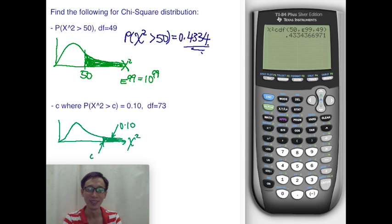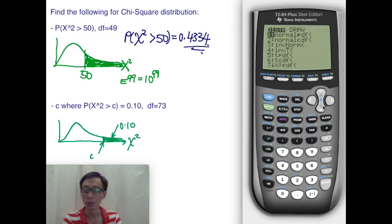Here's the problem: you invoke the distributions list and scroll down, but you don't find chi-square inverse. So what you do is run the inverse chi-square app. I've uploaded this app to the calculator.